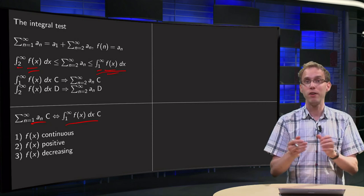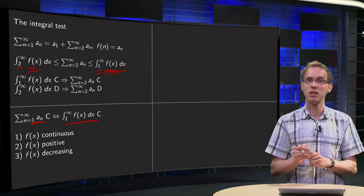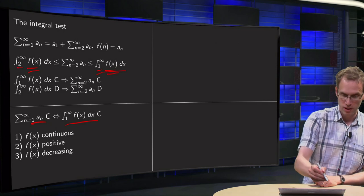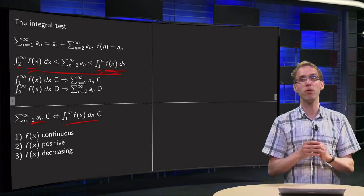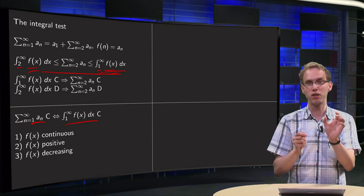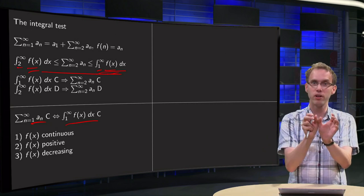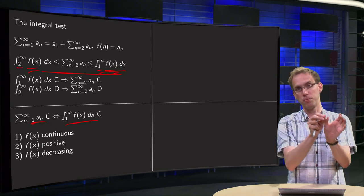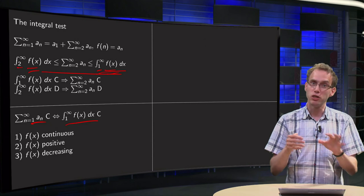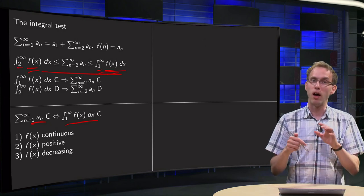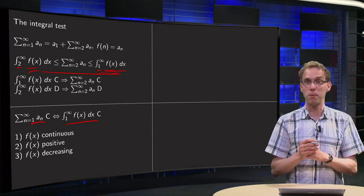So when can we apply this integral test? In order to do so, we need to have this inequality over here, and that doesn't always hold. It had to do with shifting the rectangular boxes under the curve and shifting them one step to the right, when they were all above the curve. That's usually okay if a few conditions are met.